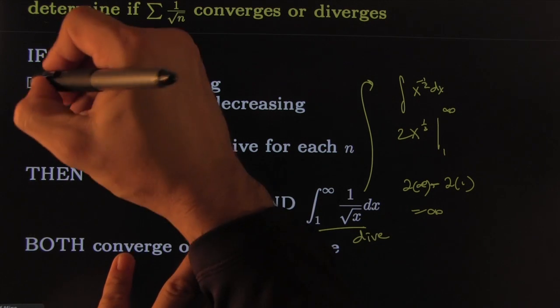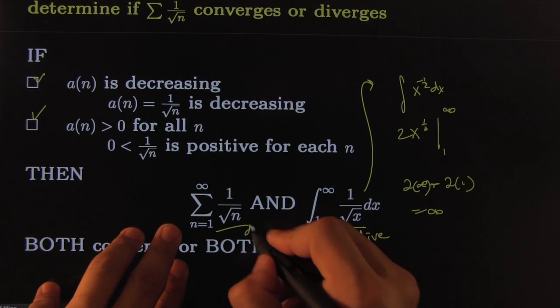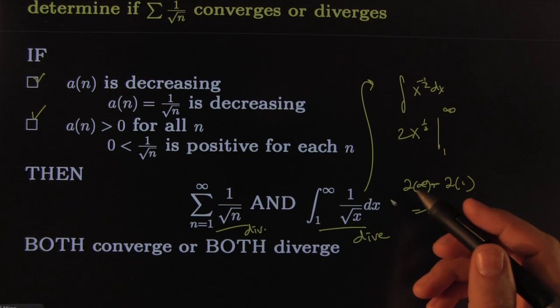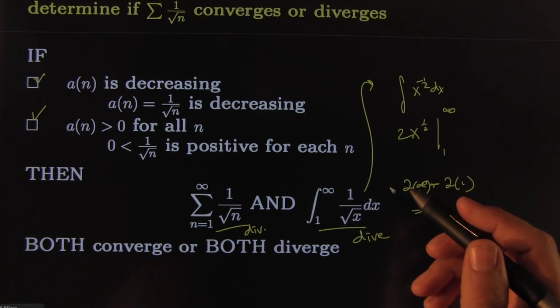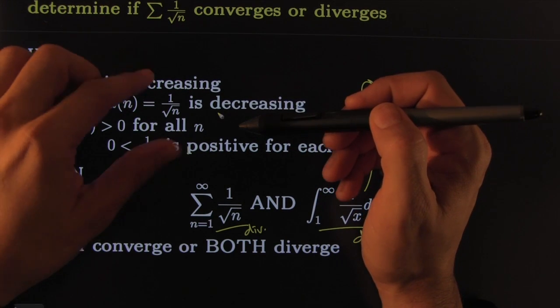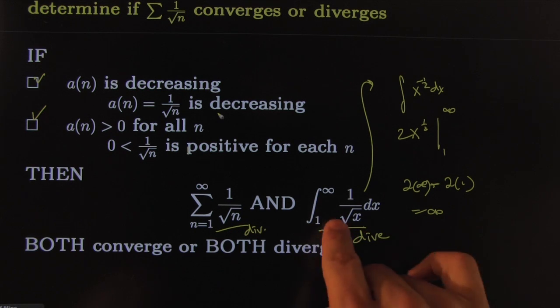Therefore this one diverges. Having checked these two things, they both do the same thing, therefore this one diverges by the integral test. Okay, that's how you do the integral test. You check the two conditions that links them together, that shows that the corners are not going to affect it.